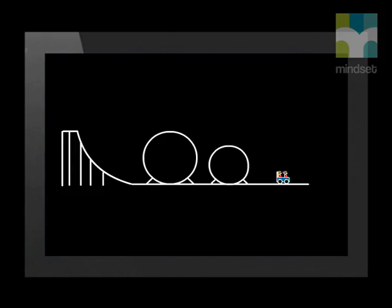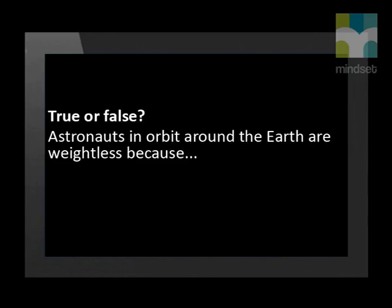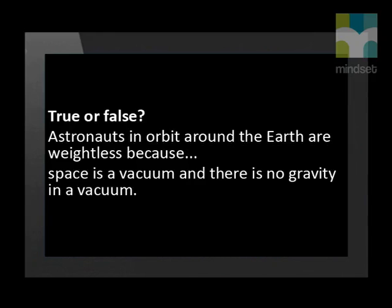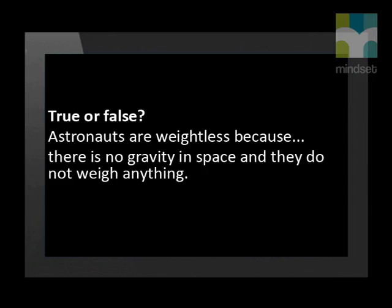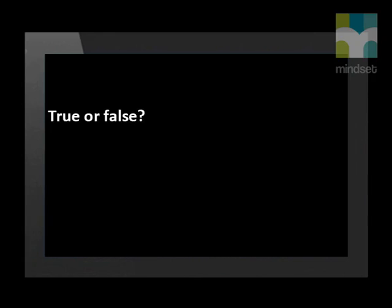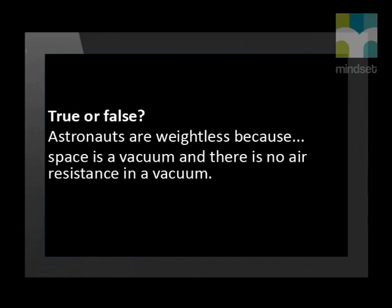Weightlessness is not a difficult subject, but consider the following true or false questions. True or false: astronauts in orbit around the earth are weightless because space is a vacuum and there is no gravity in a vacuum. That is false, because gravity does operate in a vacuum. True or false: astronauts are weightless because there is no gravity in space and they do not weigh anything. That is also false. True or false: astronauts are weightless because space is a vacuum and there is no air resistance in a vacuum. False again — gravity does not depend on air resistance.